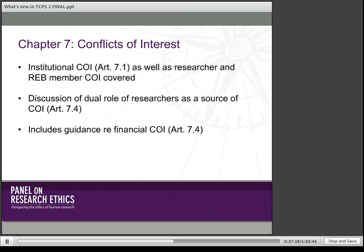Chapter 7 on conflicts of interest. We have added a provision on institutional conflict of interest. Article 7.1 says that the institution must have conflict of interest policies, but Article 7.2 introduces the notion that an institution itself may be in conflict of interest sometimes. We discuss the dual role of researchers who may be both a treating psychologist and a researcher, which can present challenges for the free and informed consent of their patients — discussed in 7.4. We also provide specific guidance with respect to financial conflict of interest.